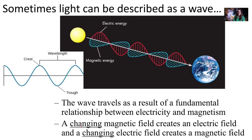We have our fluctuating electric field in red, and perpendicular to that, our fluctuating magnetic field. That light — that fluctuating electric and magnetic field — travels like a wave, kind of like a sine curve or a cosine curve. In this case, that light is leaving the sun and coming to Earth.